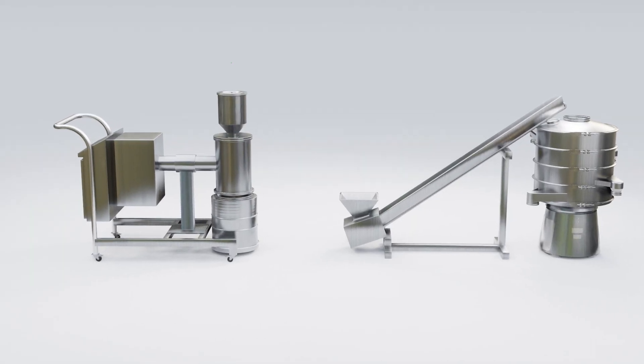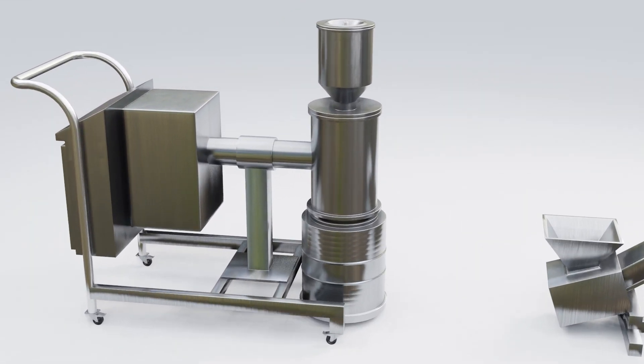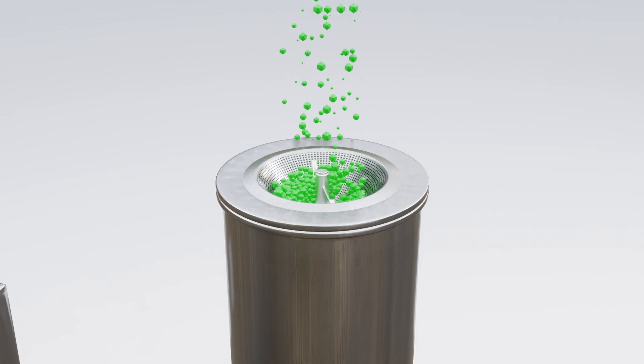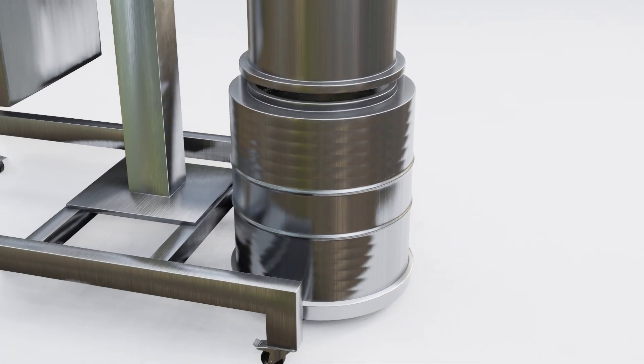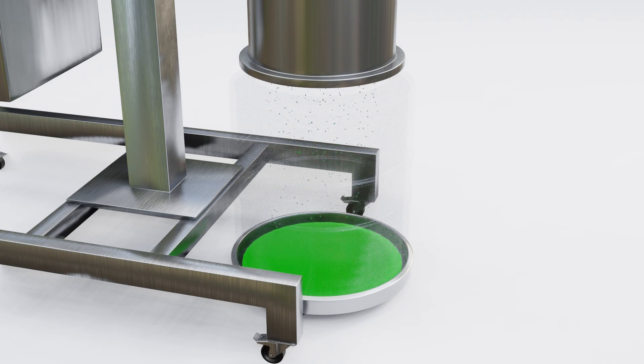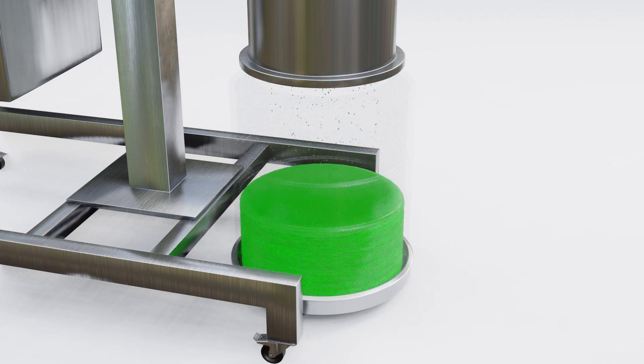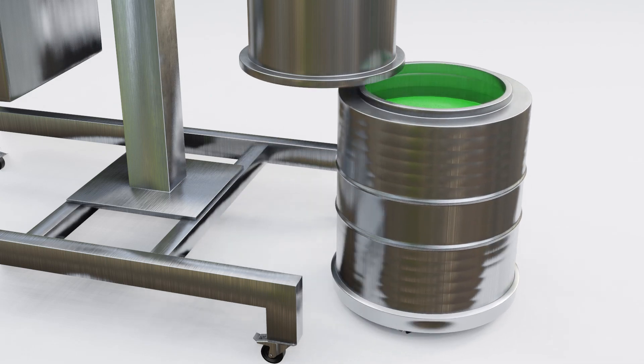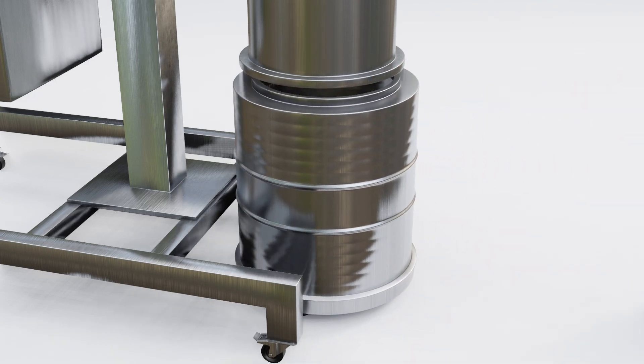Our process begins with particle size reduction to achieve the highest yields. Using a cone mill, we gently grind the flour into a uniform size, optimizing particle liberation. This critical step accelerates and maximizes trichome extraction.